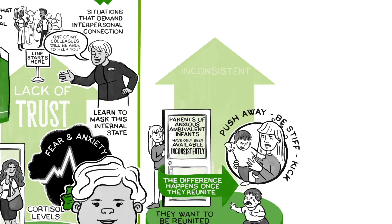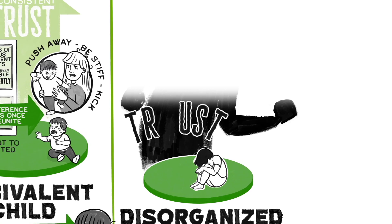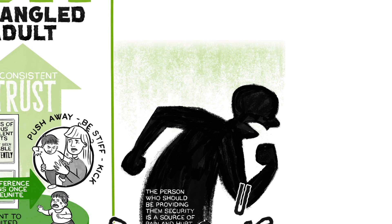There's a fourth classification, and that's called disorganized. A disorganized baby has no clear pattern to the way they respond. The person who should be providing them security is a source of pain and hurt, and that shows up in their behavior.